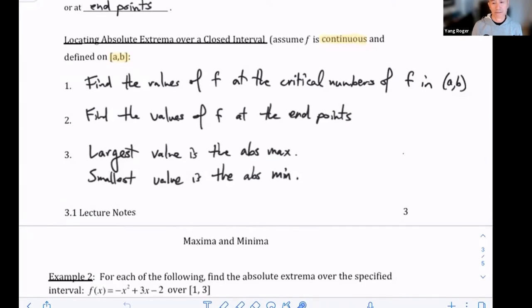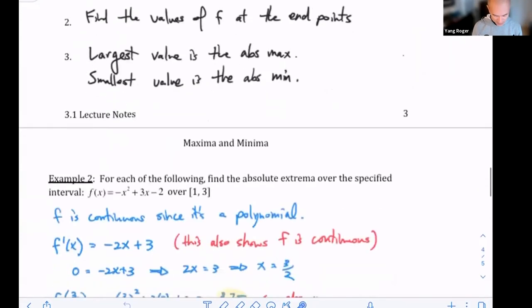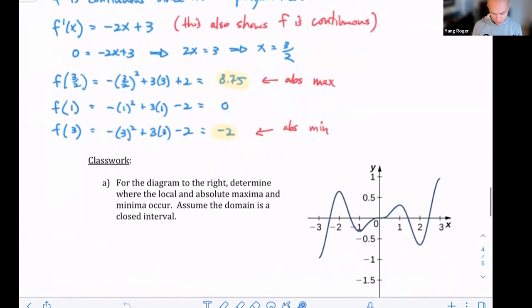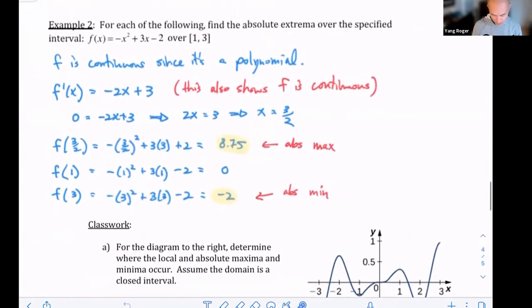So let's take a look at an example. Let's take a look at example two. Oh, we already did example two. I guess I'll just step through it. It's continuous since it's a polynomial. Also, if you can take the derivative that shows it's continuous. So this derivative exists everywhere. The critical value is going to be three halves. So now you just evaluate f at the critical value and at the two endpoints here.